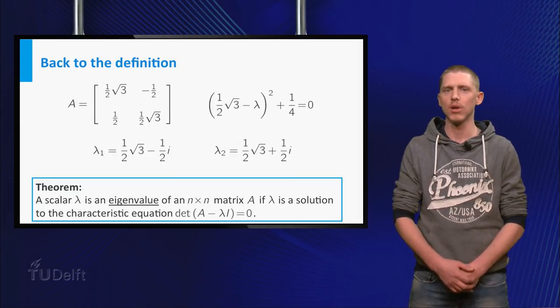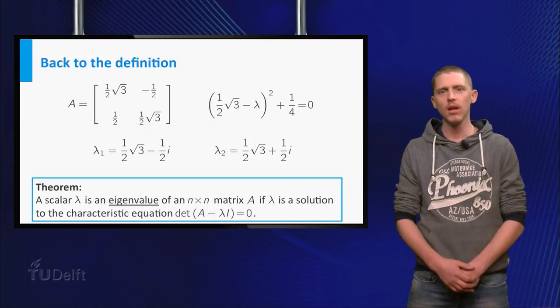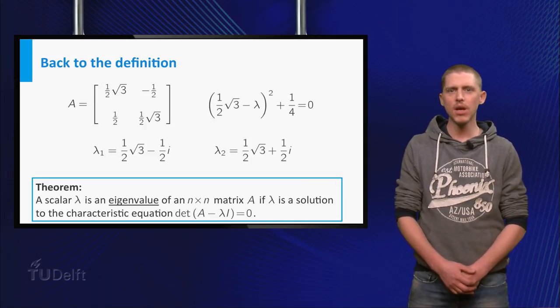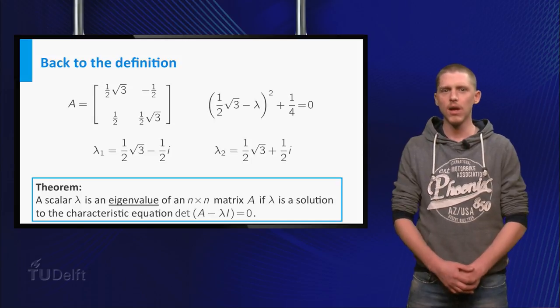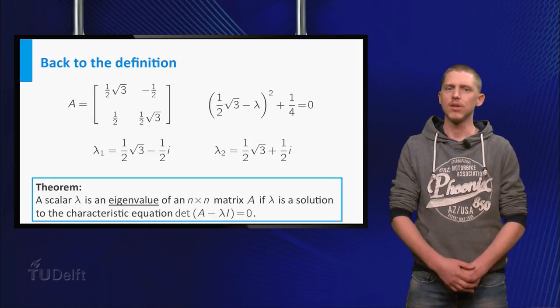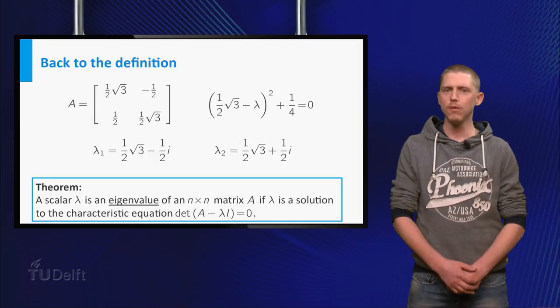So this means A has two complex eigenvalues lambda 1 and lambda 2. Do these eigenvalues have corresponding eigenvectors? The definition of the eigenvalues states that this should be the case, but can you find them?